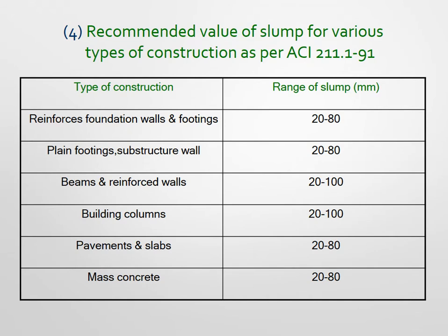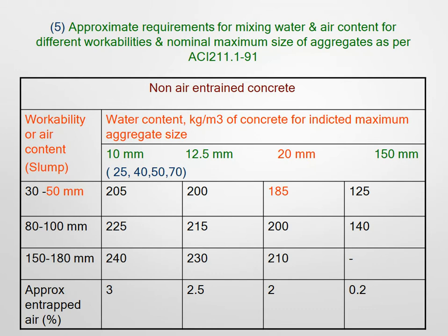Table 4 gives recommendations for slump values for various types of construction. For reinforced foundations and wall footings, the slump required is 20 to 80 mm. For retaining walls the slump is 20 to 80 mm, building columns 20 to 100 mm, pavements and slabs 20 to 80 mm, and for mass concrete a lower range applies. These slump ranges are decided according to the type of construction.